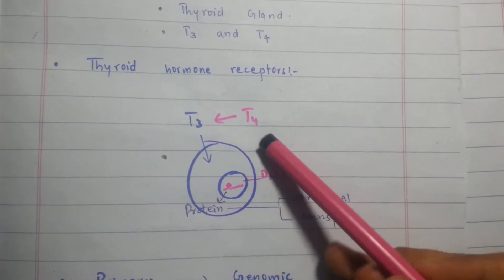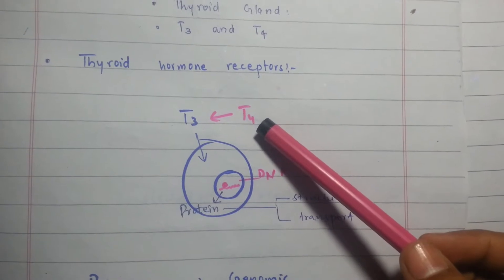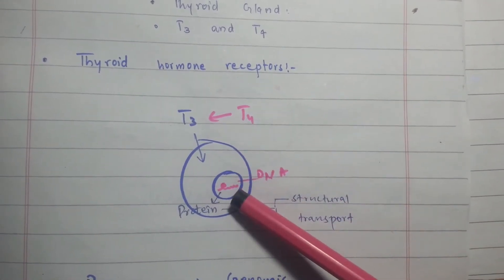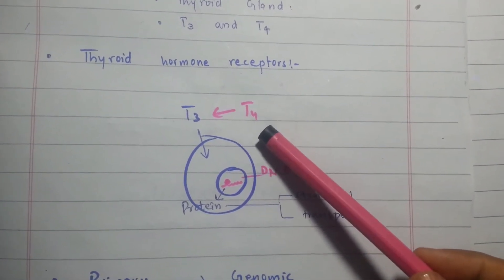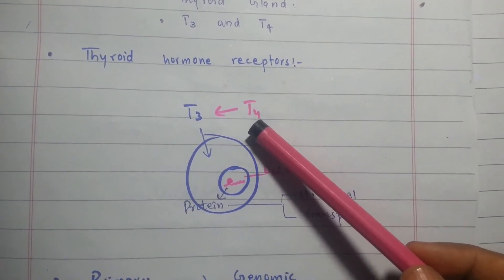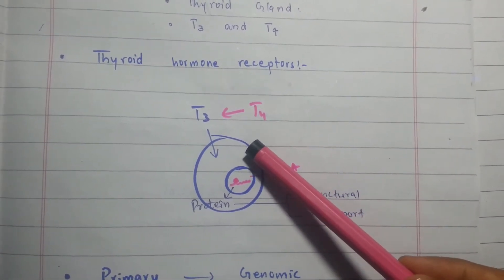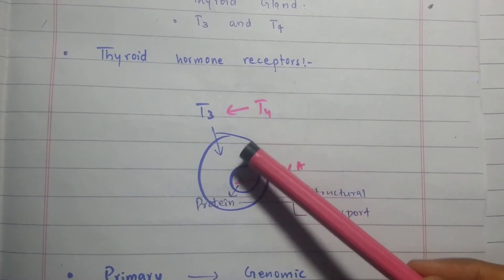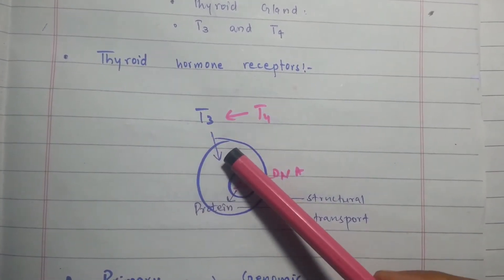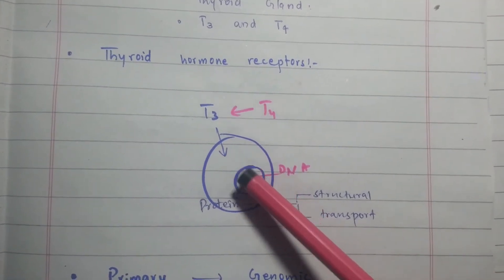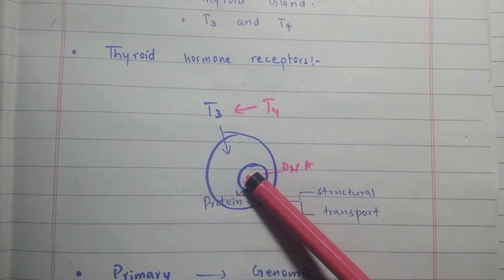Only T3 can easily enter into the cell and into the nucleus. T4 cannot directly act on the nucleus — T4 must first be converted into T3 by an enzyme. This conversion is carried out by the iodothyronine deiodinase enzyme, which catalyzes the reaction by removing iodine, producing T3, which then enters the cytosol and subsequently the nucleus.